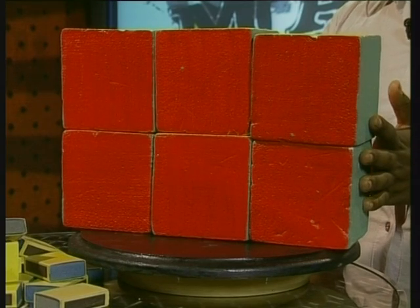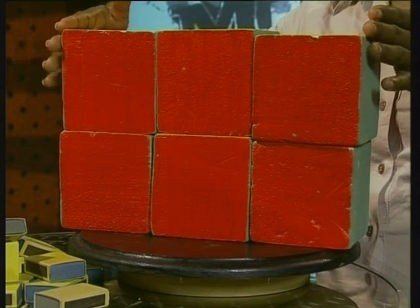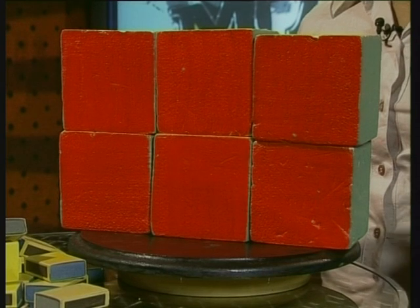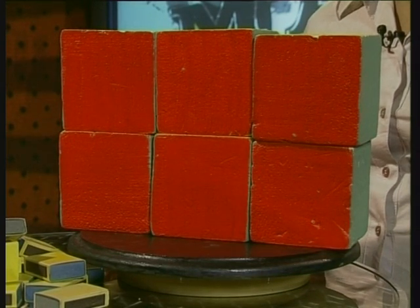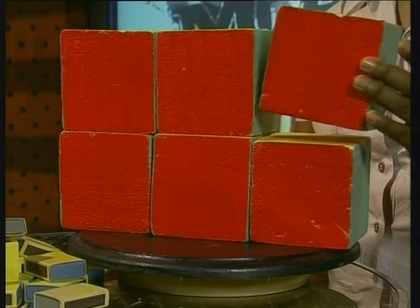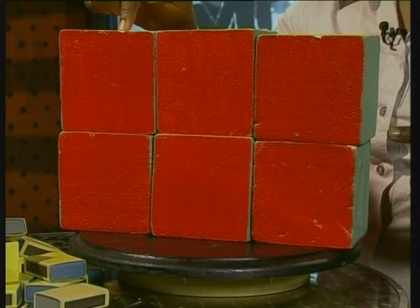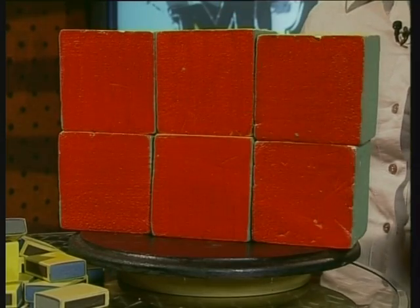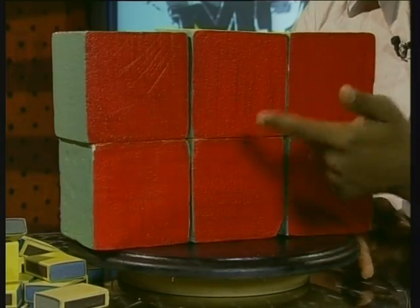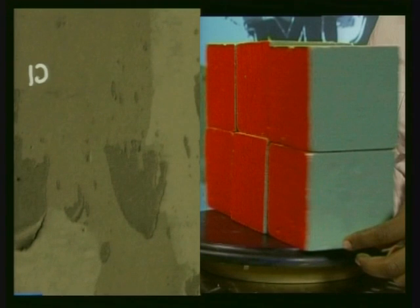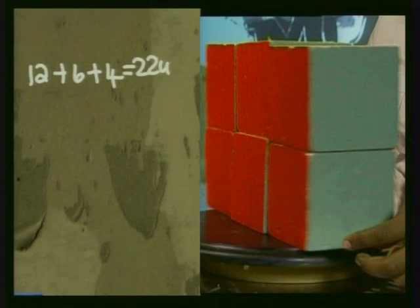I will leave this investigation to you to do as your task. This prism has a length of 3 units, a breadth of 1 unit, and a height of 2 units. What is the total surface area of this prism? Let's take one square as a square unit. Then we can just count the squares. There are 3 here on top, and another 3 underneath, 6 on each of these sides, and 2 on either end. That makes 12 plus 6 plus 4 square units, which comes to 22 square units.